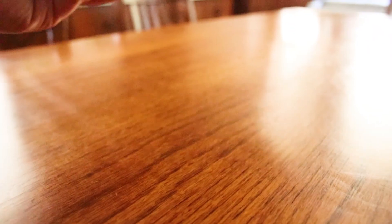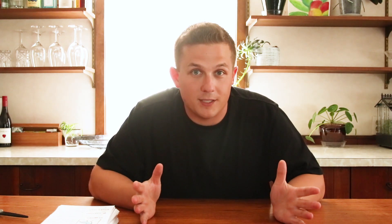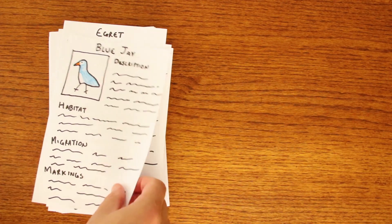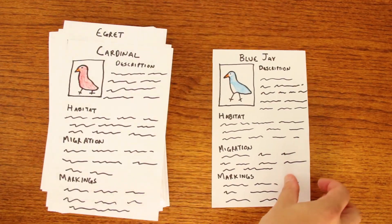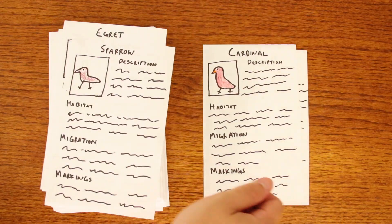See these stack of pages? Each of these pages contains information about a particular type of bird — a bird field guide, if you will. You can think of each of these pages as a row of data containing things like bird name, description, pictures, and so on. The collection of all these pages together make up a table.